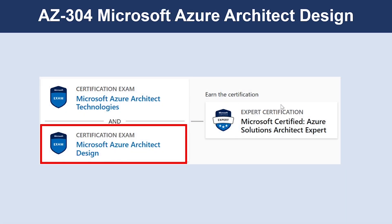To achieve Microsoft Certified Azure Solutions Architect Expert, you need to certify on both AZ-303 and AZ-304. AZ-303 is all around Azure Architect Technologies, and AZ-304 is all around Microsoft Azure Architect Designing.